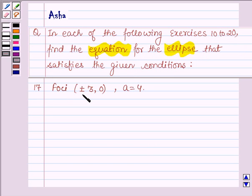Problem 17: foci (±3, 0), a = 4. Let's now start with the solution. Please refer to the earlier questions before solving this problem to get an idea of an ellipse whose major axis is along the x-axis.